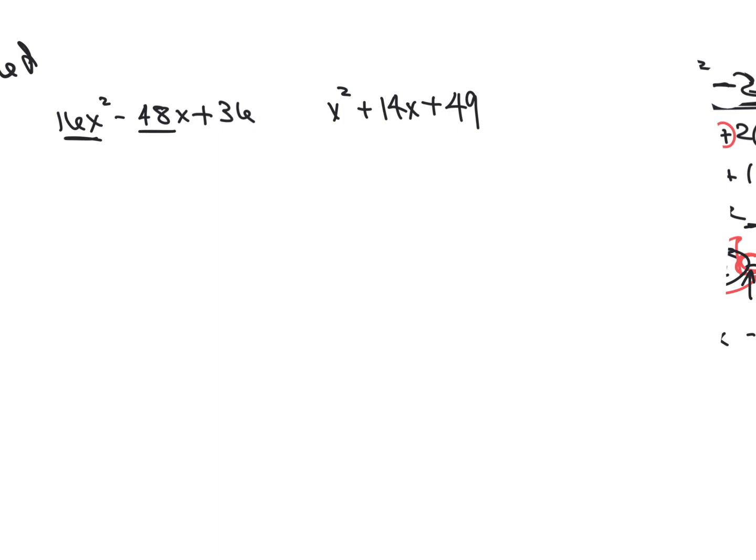Let's look at this one. Square root of x squared is x. Square root of 49 is 7. If I take 7 times x and multiply that by 2, do I get 14x? Yes, I do. So therefore it's a perfect square trinomial. I can make parentheses, a square. This sign goes here. Square root of x squared is x, square root of 49 is 7. And I'm done. It's really quick and simple to do.